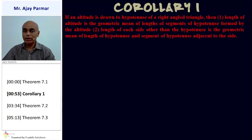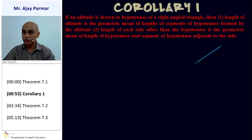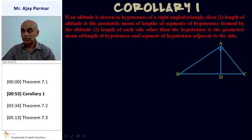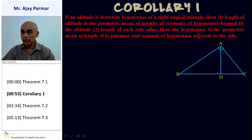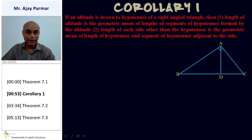The corollary states: if an altitude is drawn on the hypotenuse of a right-angled triangle, then the length of the altitude is the geometric mean of the lengths of the segments of the hypotenuse formed by the altitude, and also the length of each side other than the hypotenuse is the geometric mean of the length of the hypotenuse and the segment of the hypotenuse adjacent to that side. In triangle ABC, where angle A is a right angle and AD is the altitude, line segment BD is adjacent to line segment AB, whereas line segment CD is adjacent to line segment AC.